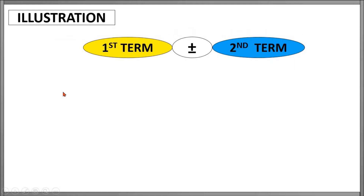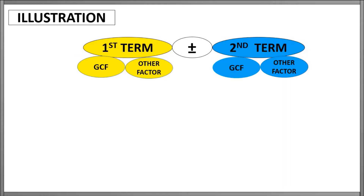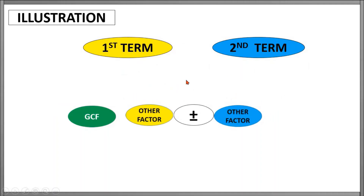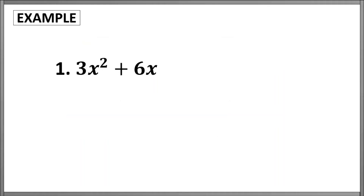To illustrate, let us consider this figure which represents a binomial. We have a first term, either a plus or minus sign, and our second term. For the first move, we will identify the GCF of these terms as well as their other factors, and then we will take the GCF as one of the factors of our answer. For the second factor, we will use the remaining factors of our two given terms and enclose them in a pair of parentheses. The answer takes this form: the GCF of the given terms times the quantity of the factor left on the first term, the given operation, and then the factor left on our second term.